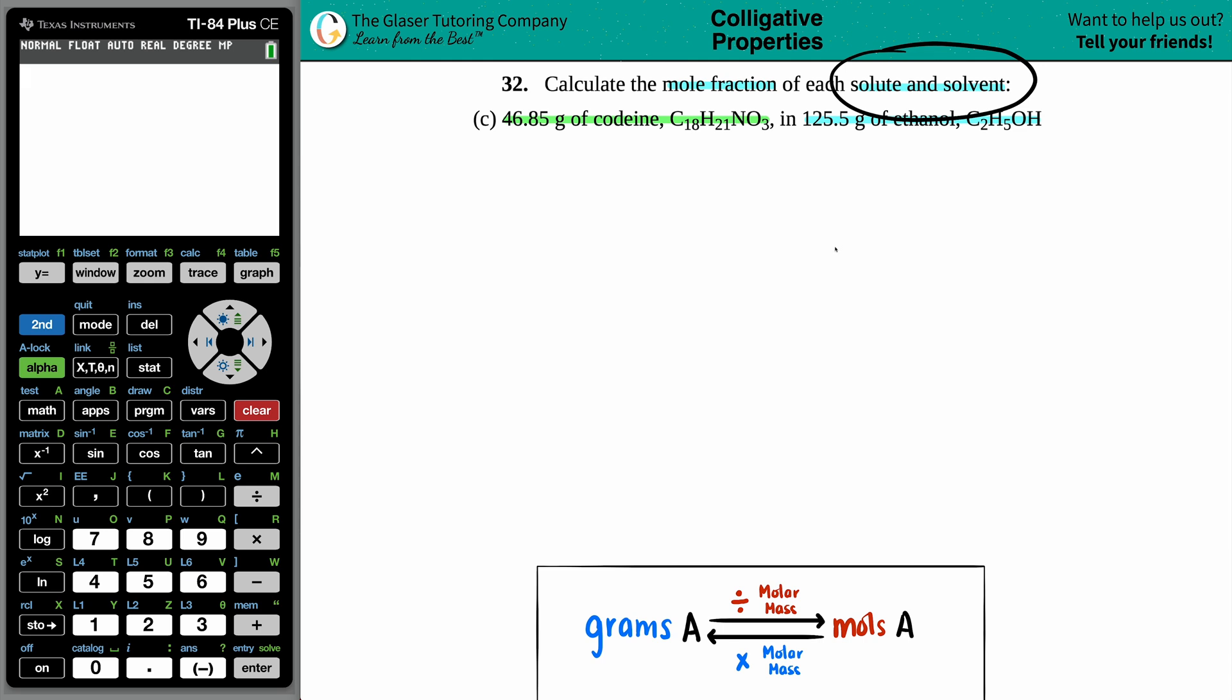In this case we have our codeine, 46.85 grams of codeine being dunked in ethanol, which is a liquid medium - drinking alcohol is a liquid. So the codeine is going to be our solute and the ethanol is going to be our solvent.